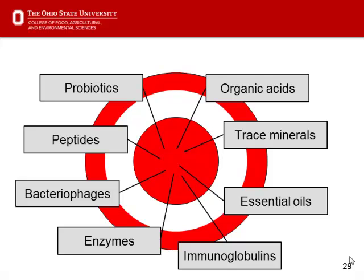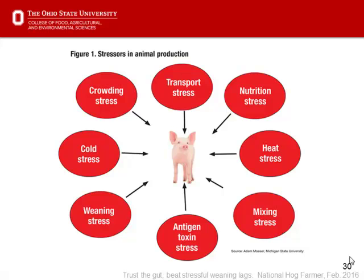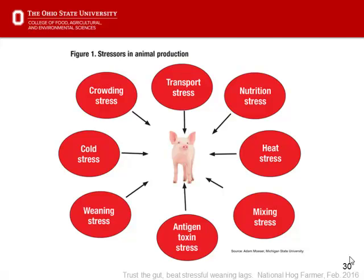Finally, all of the nutritional factors discussed are related to how animals react to their environment. Stressors of animal production include crowding, transport stress, nutritional stress from diet transitions, heat stress, different antigens or toxins, weaning stress, and cold stress — all of which impact the gut. As a nutritionist, there are ways we need to better understand how nutrition impacts GI development to address these challenges.